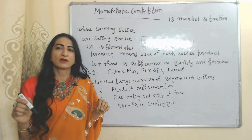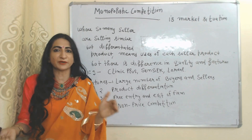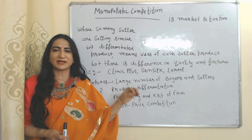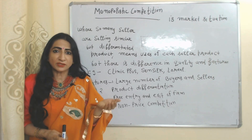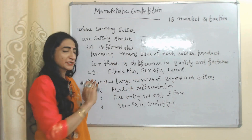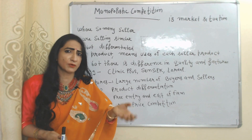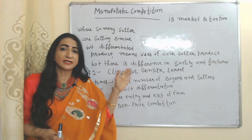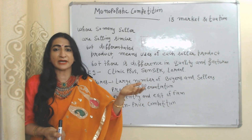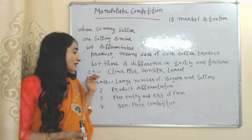Now we are going to talk about monopolistic competition. Monopolistic competition is a market situation where so many sellers are selling similar but differentiated products. The uses of each seller's product are the same but there are differences in quality and features. For example, there are so many companies selling shampoo like Clinic Plus, Sunsilk, and L'Oreal. The use of each company's shampoo is the same — we wash our hair — but quality and features of each company's shampoo are different, like anti-hair fall or anti-dandruff shampoo.